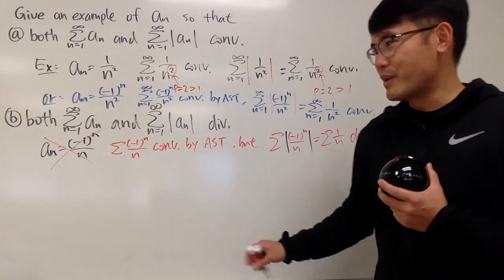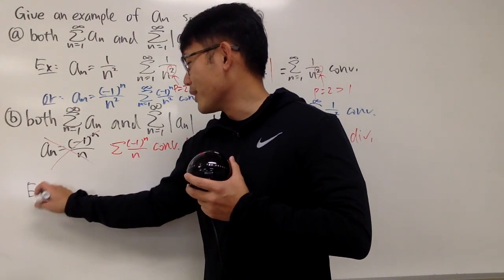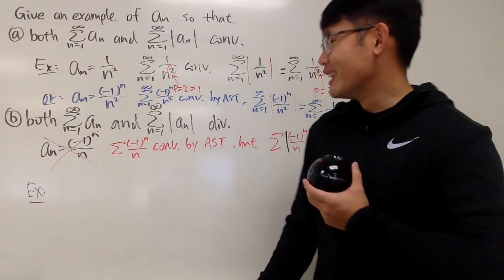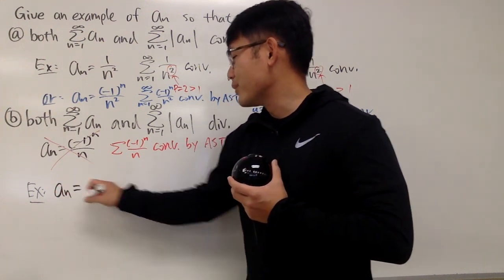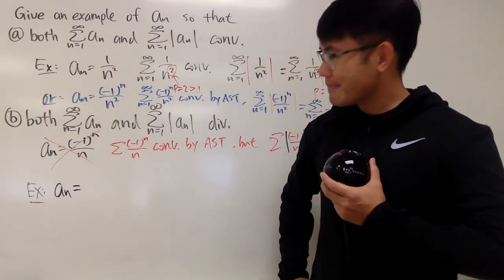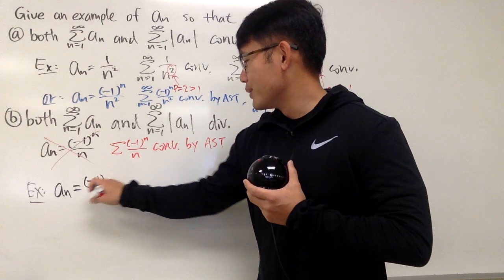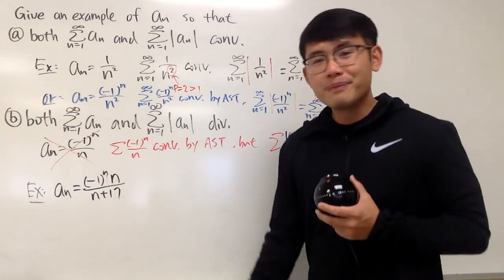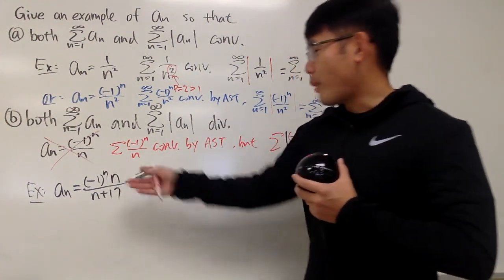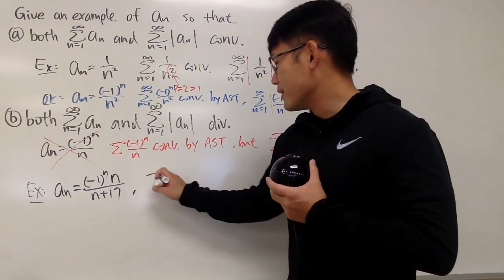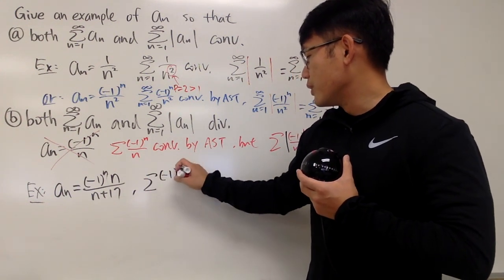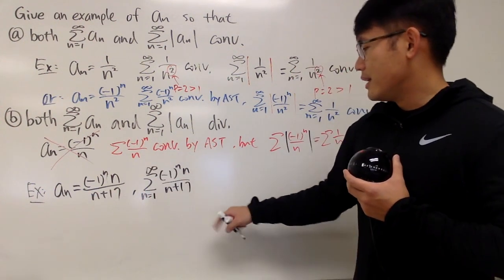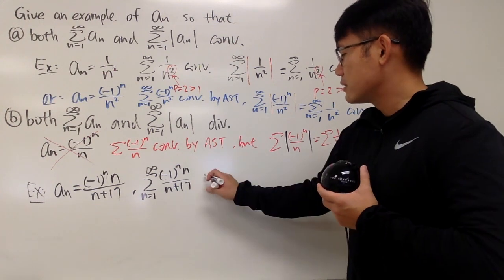What we can do is pick anything so that a_n does not approach 0 as n goes to infinity — that will do the work. For example, let's say a_n = (-1)^n · n/(n+17). Both series diverge with this choice. Let me show you why. The series as n goes from 1 to infinity of (-1)^n · n/(n+17) diverges.